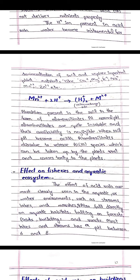Here, manganese 2+ combines with 2 hydrogen ions at cation exchange sites — there is an exchange of Mn²⁺ and 2H⁺ per exchange site. Aluminium is present in the soil in the form of aluminium silicate. At normal pH, aluminium silicates are quite insoluble and their availability is negligible.